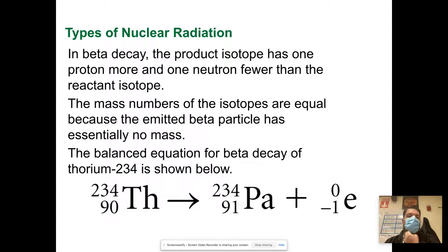In beta decay, the product isotope has one more proton and one neutron fewer than the reactant isotope. The mass numbers of the isotopes are equal, but the emitted beta particle essentially has no mass. The balanced equation for beta decay is you start with thorium-234, and this is the number of particles that breaks down into 234. So the mass stays the same, but now you've got a different particle because you have an extra proton. 90 protons here, 91 protons here, plus the emitted electron.